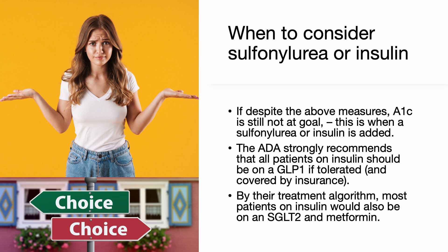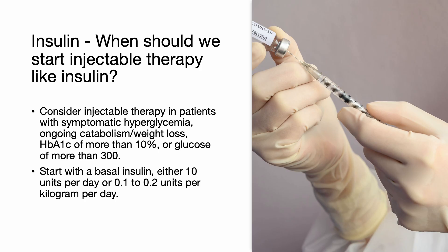When should we consider adding a sulfonylurea or insulin? If the A1c target goal remains above the target level — whether less than 7% or less than 8% — and the patient is already on maximum optimal doses of metformin, a GLP-1 agonist, an SGLT2 inhibitor, and a DPP-4 inhibitor, then consider adding a sulfonylurea or insulin. Choose insulin in patients with symptomatic hyperglycemia, ongoing catabolism or weight loss, a hemoglobin A1c of more than 10%, or glucose levels more than 300. Always start with a basal insulin like glargine or detemir, starting at 10 units per day or using 0.1 to 0.2 units per kilogram per day.